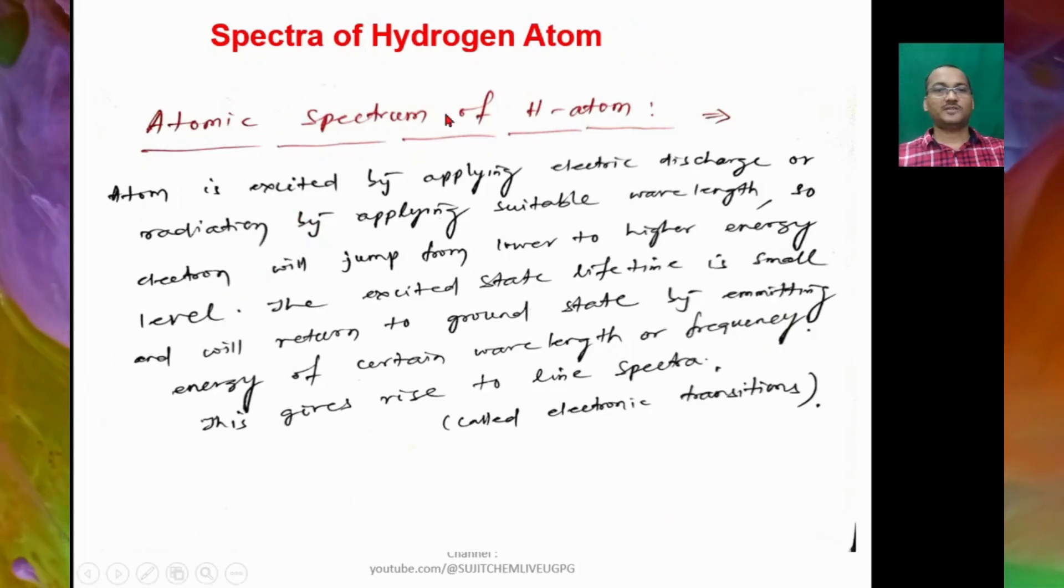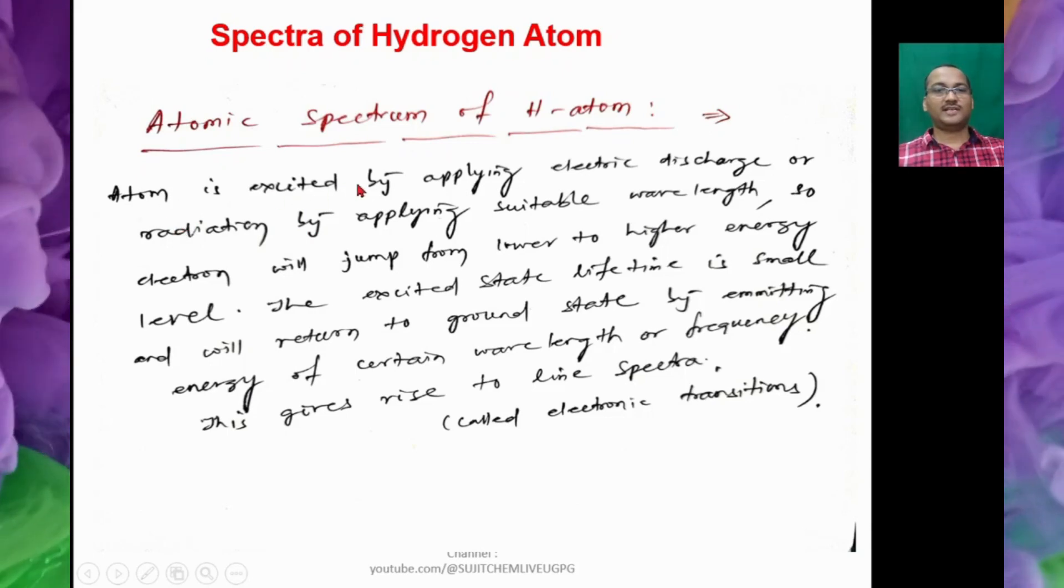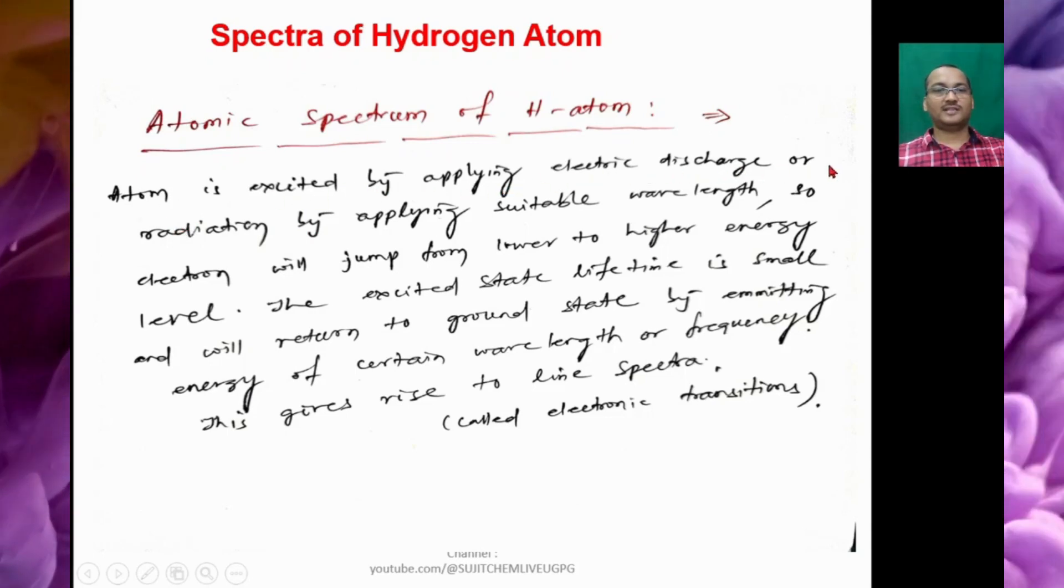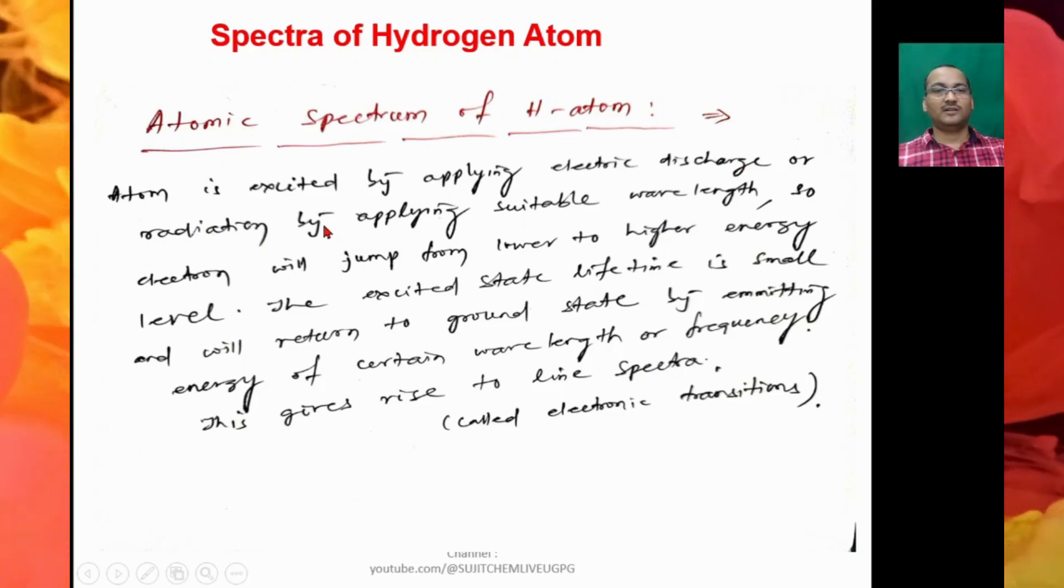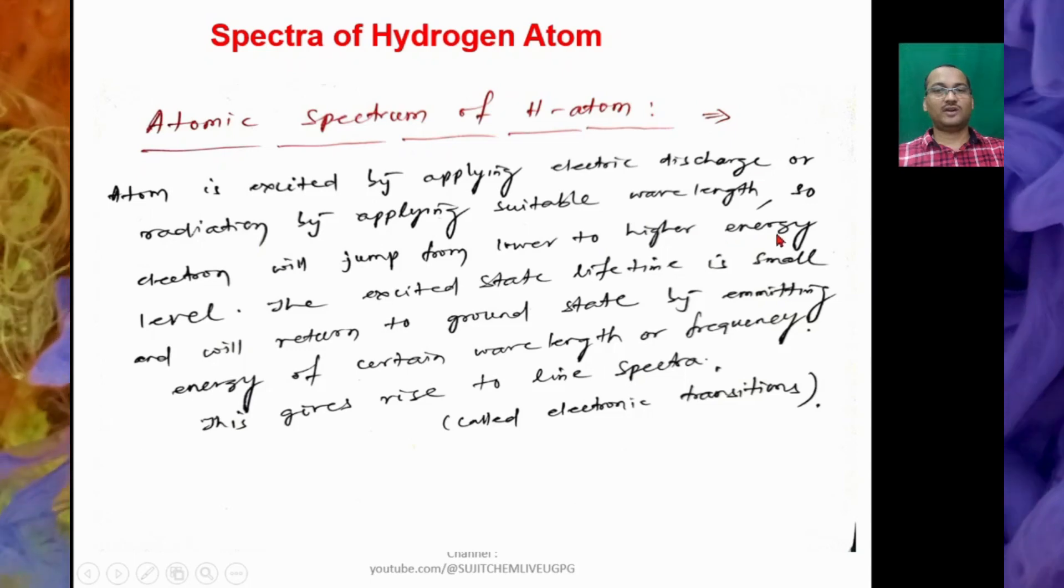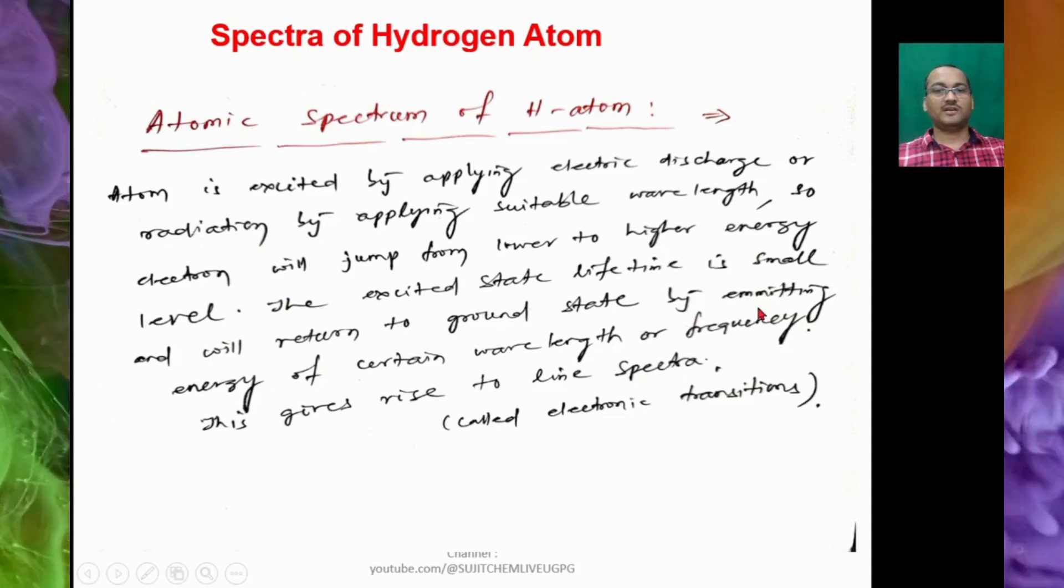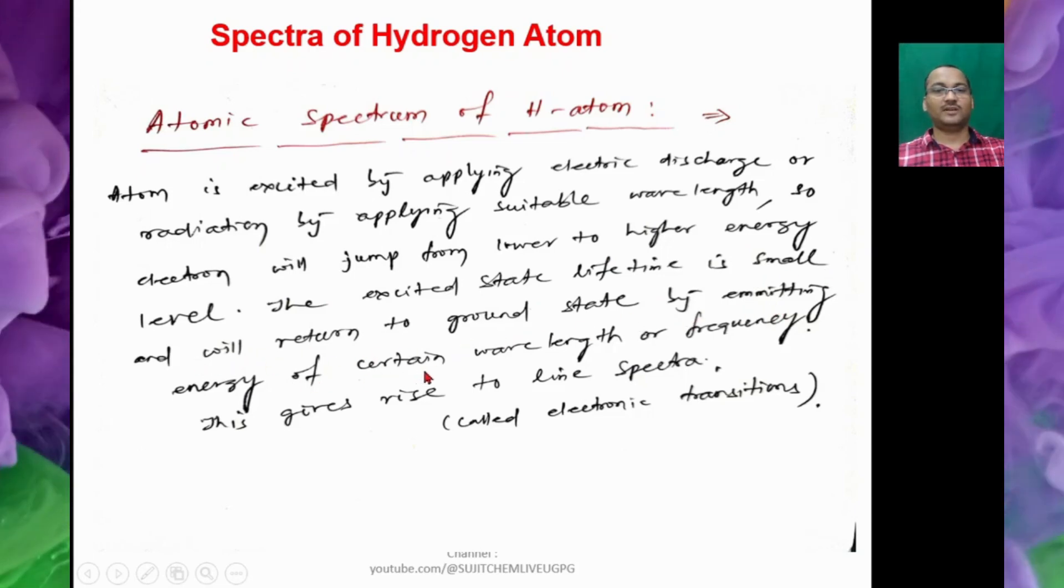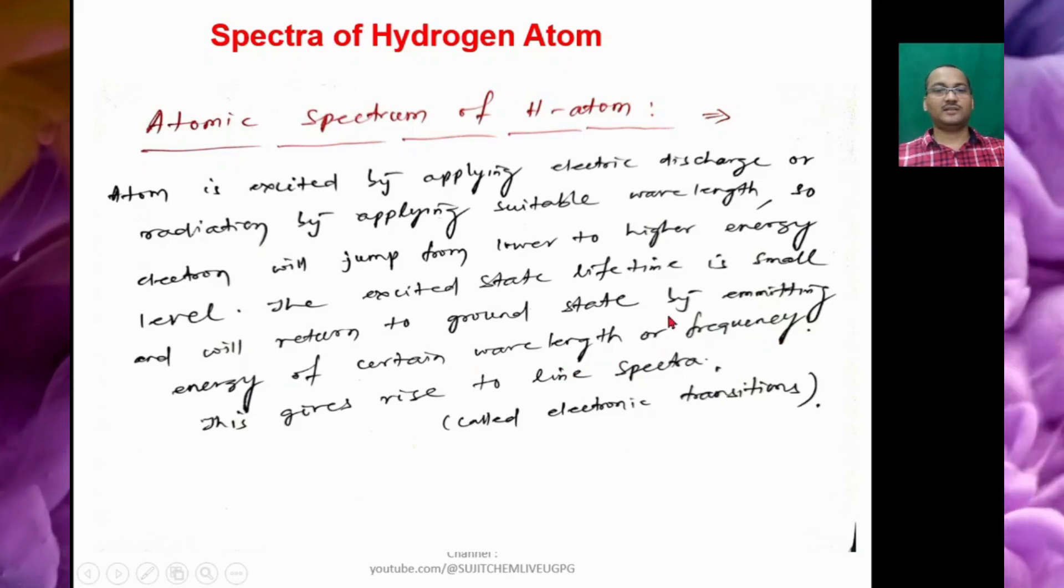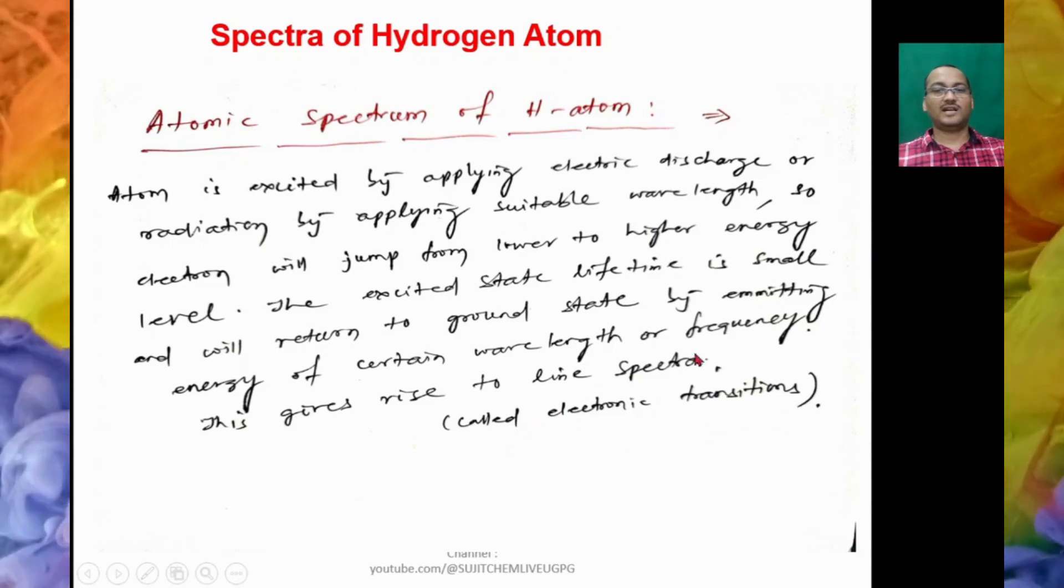The next is atomic spectrum of hydrogen atom. Usually atoms are excited by applying electric discharge or radiation of a suitable wavelength, so the electron will jump from lower to higher energy level. The excited state lifetime is small and will return to ground state by emitting energy of certain wavelength or frequency, and this gives rise to line spectra or you can call it electronic transitions.